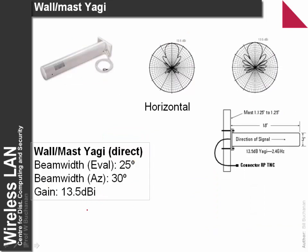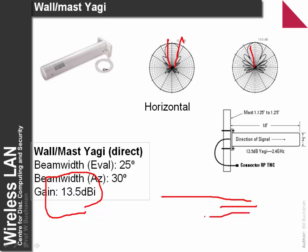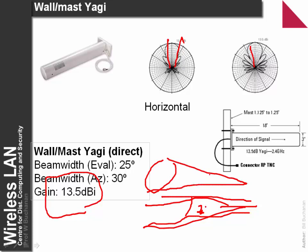More directional Yagi antennas offer 13.5 dBi with quite a small beam width. A Yagi with 25 degrees one way and 30 degrees the other is almost like a cone of equal size — the transmitter should be somewhere within that 20 to 25 degree angular range.